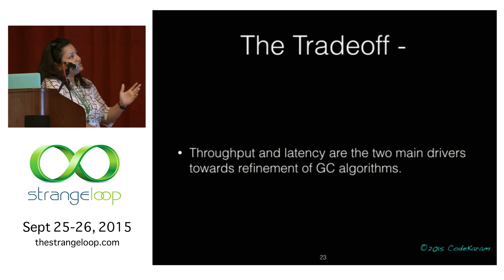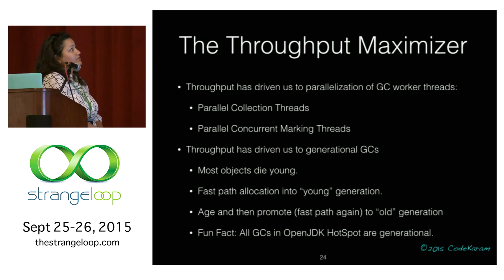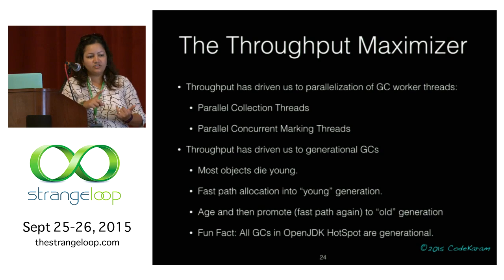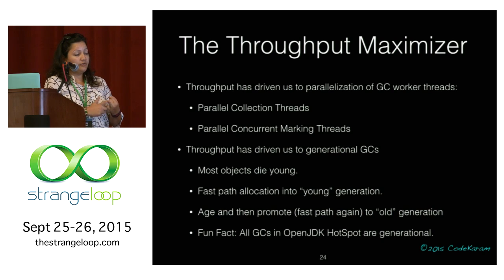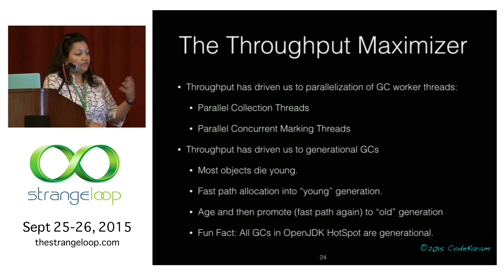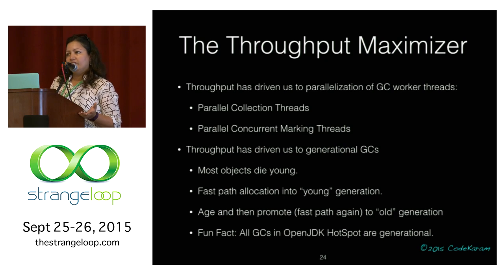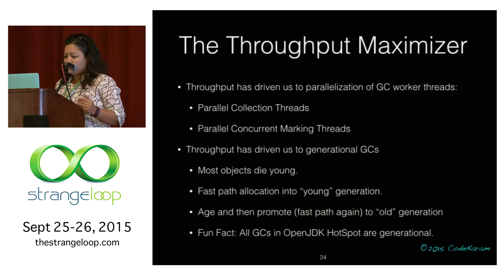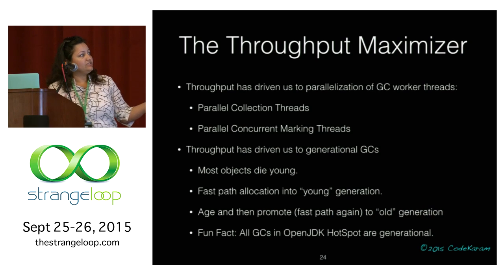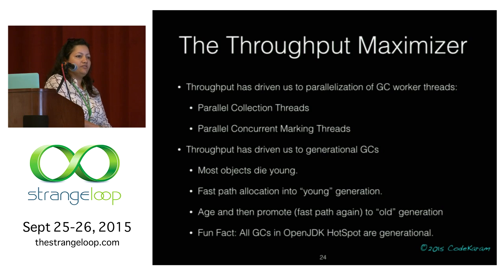In OpenJDK Hotspot, there are refinements made keeping throughput and latency drivers in mind. For throughput, parallelism is key — there are parallel GC threads and parallel concurrent threads. Previously concurrent threads would be just one to avoid overloading application threads, but now they're parallel too. The biggest driver is generational GCs. Experiments done at Sun and Oracle confirmed that a single generation doesn't scale well and has throughput performance challenges, so all OpenJDK Hotspot GCs are generational.